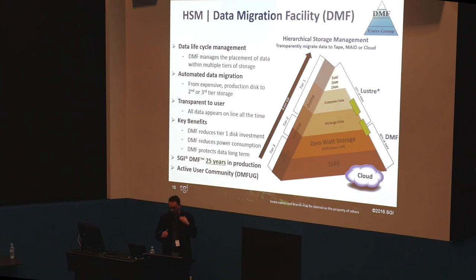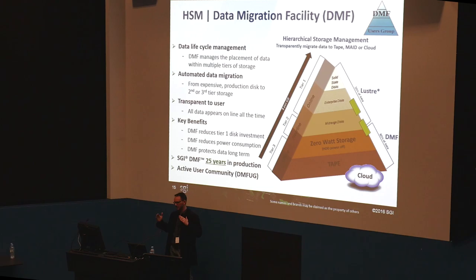The DMF structure with Lustre on top is a performance-to-capacity and cost relationship. The highest cost and highest performance is at the top of the pyramid, and the highest capacity, slower performance, and lower cost is at the bottom.